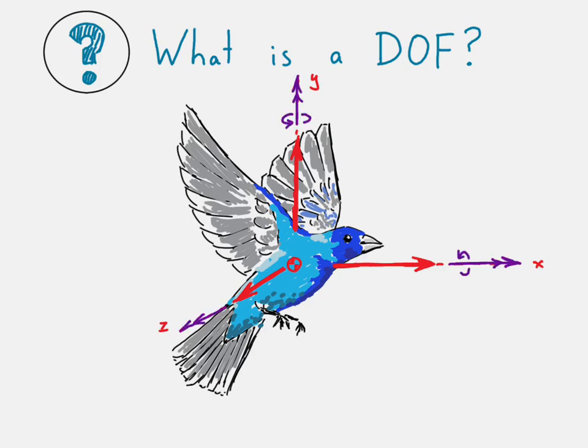And we also have the possibility that this bird could change its orientation by rotating about each of these axes. For example, if that bird wanted to face us, it might rotate about the y-axis.